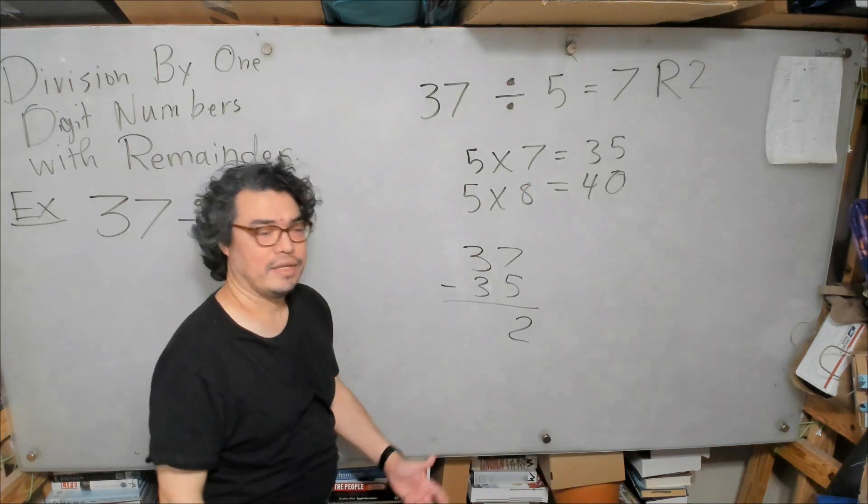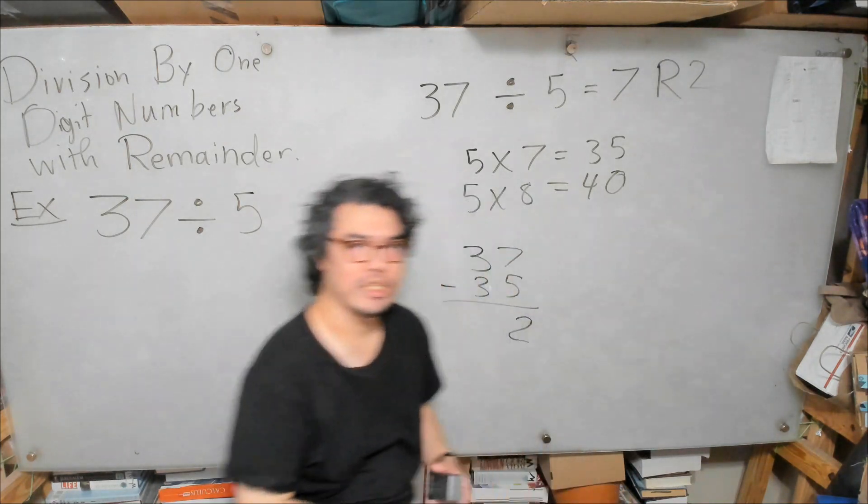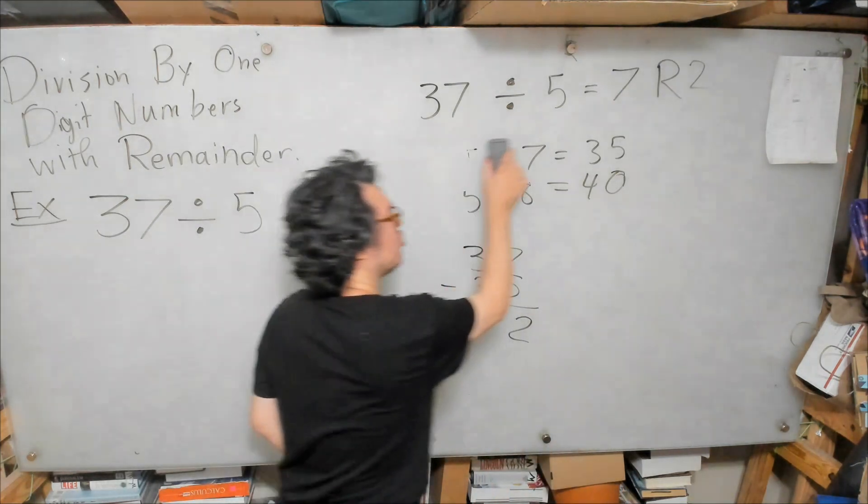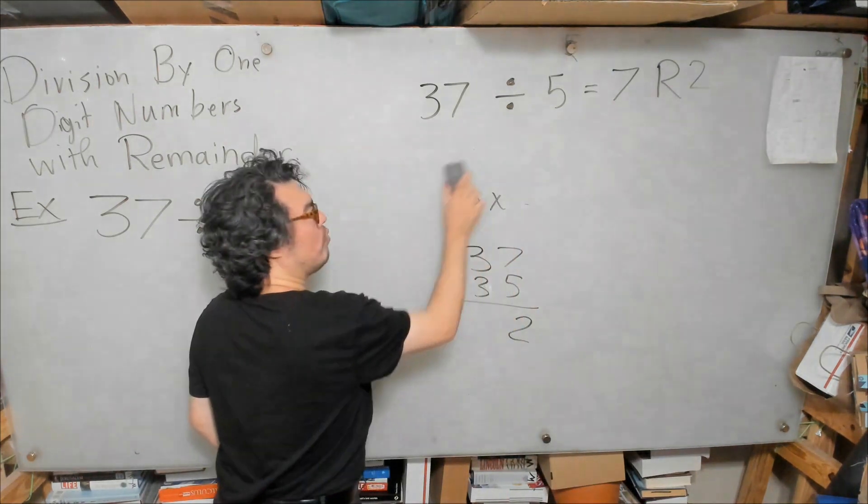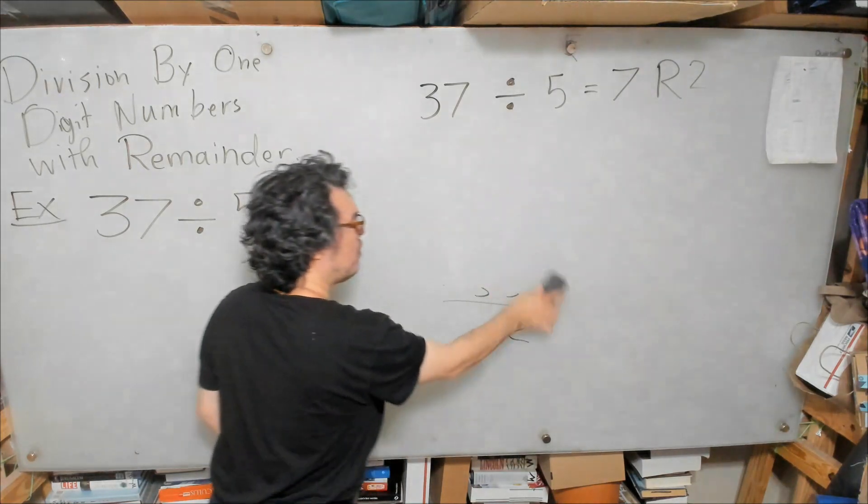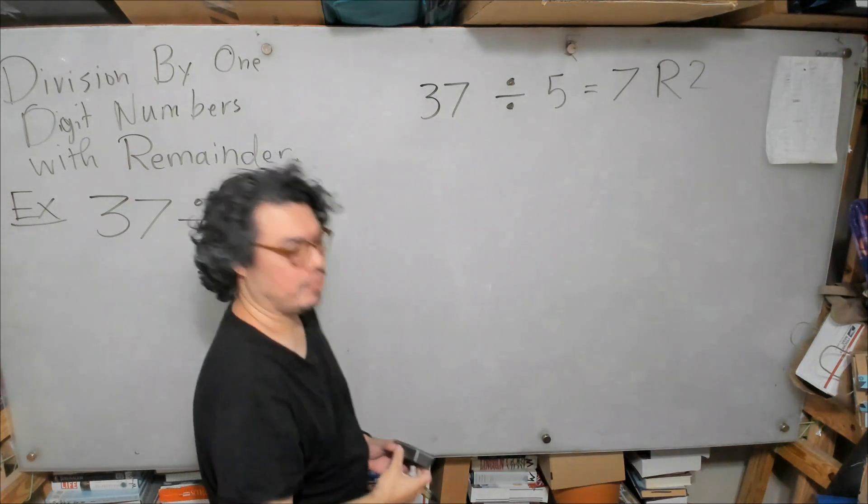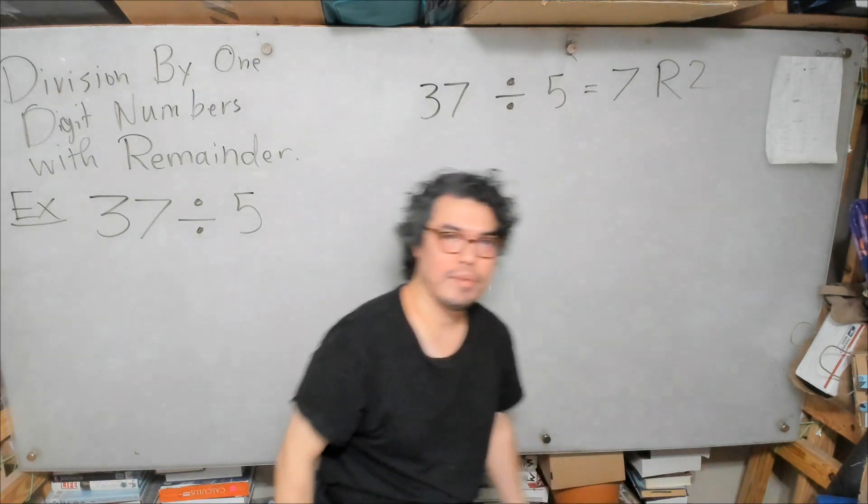Although I haven't said it explicitly, you can see from our discussion that the remainder is always either 0 when the division is perfect, when the division has no remainder, or positive. The remainder can never be negative.